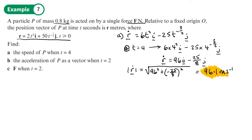So we differentiated the position vector to get the velocity vector, substituted t = 4 to find the velocity at that time, and then used Pythagoras to find the speed from the velocity. We could also work out the direction by using tan inverse on those components, drawing a diagram first, to find the bearing.